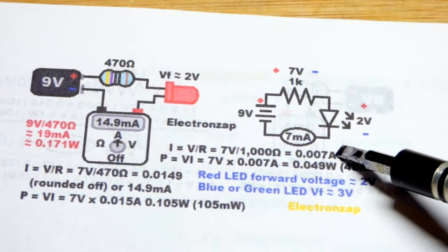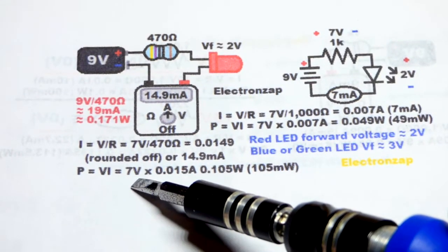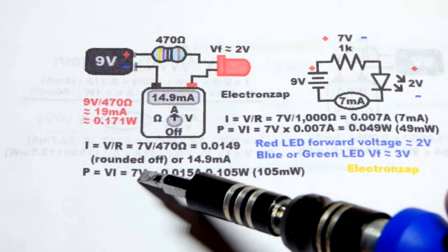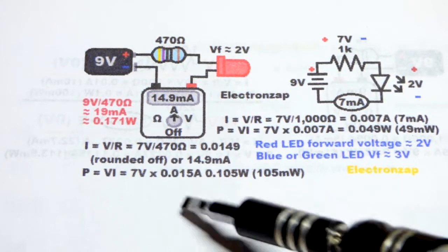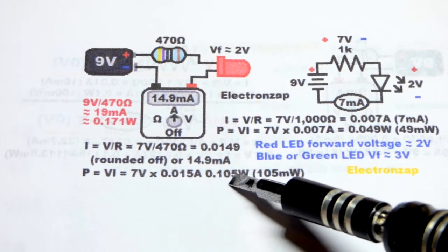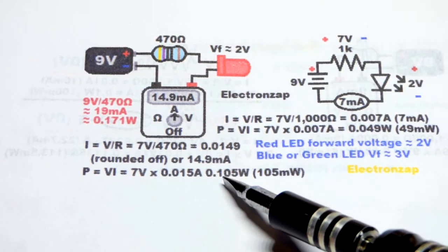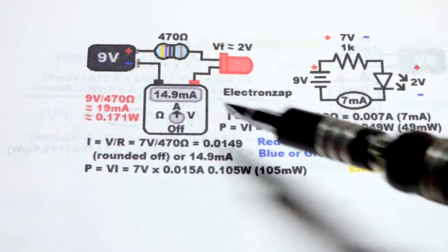Usually you talk about current at these low levels as milliamps, but when you're doing the formulas you want to do them in amps. When it comes to the heat generation of the resistor, we looked at it without the LED in series, but now that the LED took off a couple volts, we got about 15 milliamps times seven volts, about 0.105 watts.